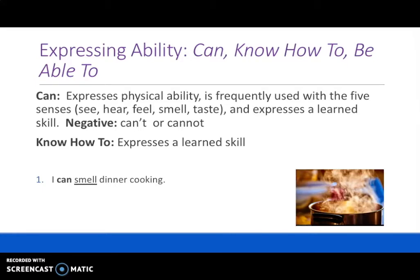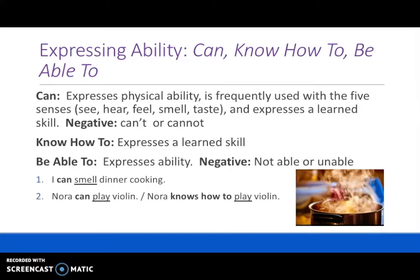Know how to expresses a learned skill — something that you learn. For example: Nora can play violin, or Nora knows how to play violin. Playing violin is a learned skill, so we can use know how to. But it's also a physical ability, so we can use can as well. Be able to expresses ability, and the negative is not able or unable. For example: I'm unable to reach the highest shelf, because I don't have the ability — I'm too short.